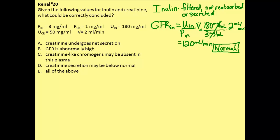Since inulin is our gold standard and gives us a normal value, we can go ahead and eliminate choice B because the GFR is not abnormally high. This is a normal value for the clearance of inulin and thus the GFR.